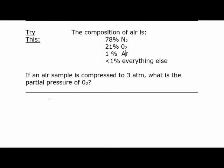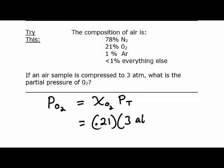We use the same partial pressure expression, this time for oxygen. The partial pressure of O₂ is the mole fraction of O₂ times the total pressure. The mole fraction is the mole percent divided by 100, so 0.21, and the total pressure is 3 atmospheres. When you do the math, you get 0.63 atmospheres. And that is Dalton's law of partial pressures.